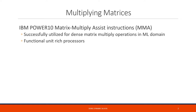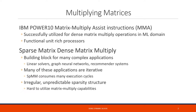New processors now feature matrix multiply units that are successfully utilized for dense matrix multiply operations, especially in the machine learning domain. For example, IBM Power 10, our target system in this work, offers matrix multiply assist instructions. These new matrix multiply units create a functional unit-rich environment. Although these matrix units successfully speed up dense matrix multiplications, special attention is required for sparse matrix primitives.